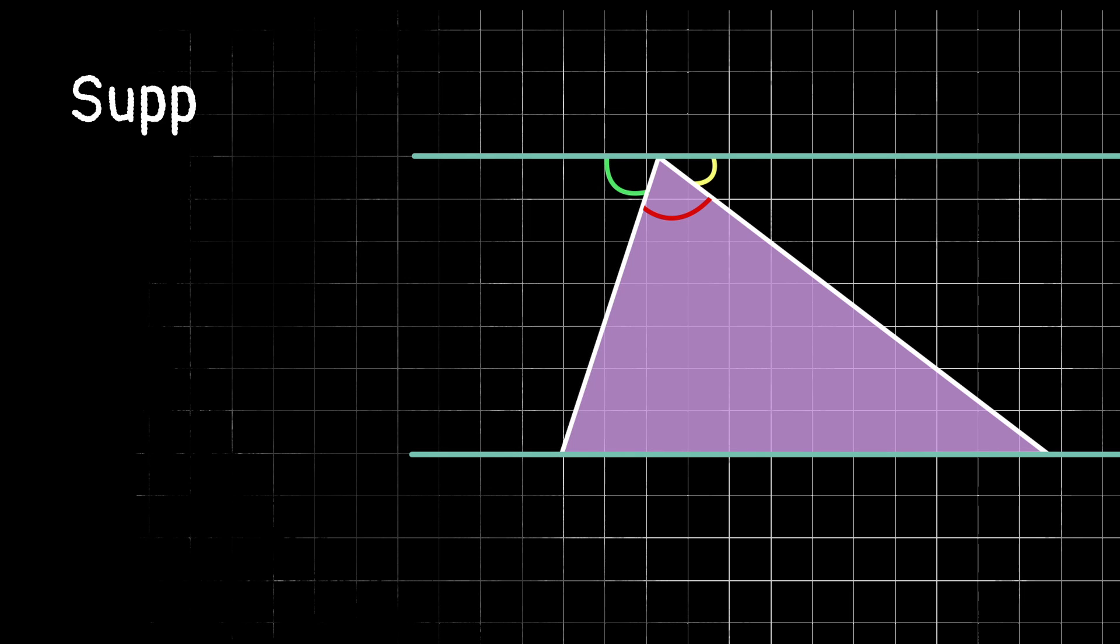If you recall, supplementary angles, or those that form a straight line, add up to be 180 degrees. So here we know that the green angle plus the red angle plus the yellow angle must equal 180 degrees.